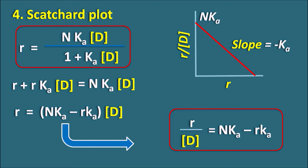In this way, protein-drug binding interactions can be studied using four types of plots. The direct plot, which is the Michaelis-Menten equation. The second is the Lineweaver-Burk plot, also called the double-reciprocal plot or Klotz plot, which gives a straight line but with clustered data points. Third is the Hitchcock plot, where D/R versus D is plotted to give a straight line. Fourth is the Scatchard plot, where R/D versus R is plotted to produce a straight line with a negative slope. The last two plots are more useful for studying protein-drug interactions. If you like this video, please subscribe to our channel, share this video with your friends, and post your comments in the comment box. Thank you for watching.